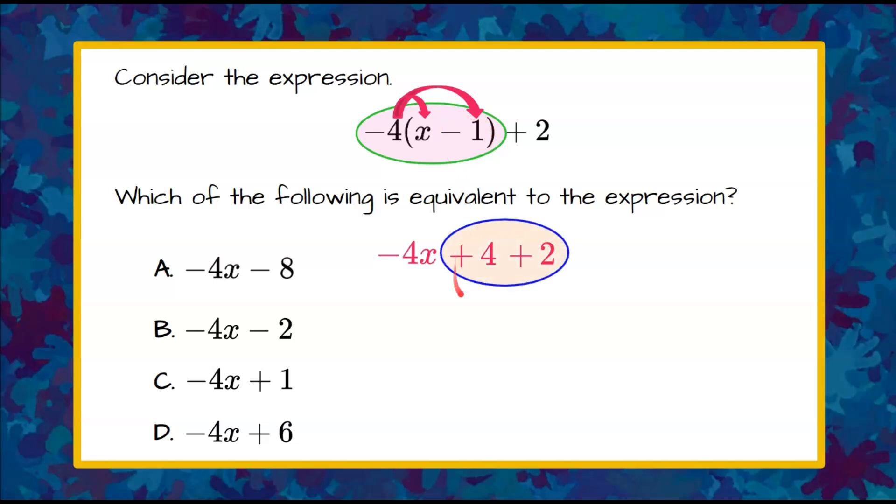Now we have like terms of 4 and 2, and 4 plus 2 is 6. So that gives us negative 4x plus 6, and that is in simplest form. We can see that that corresponds to answer D.